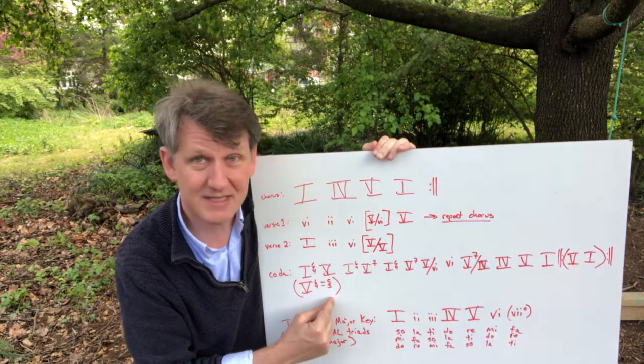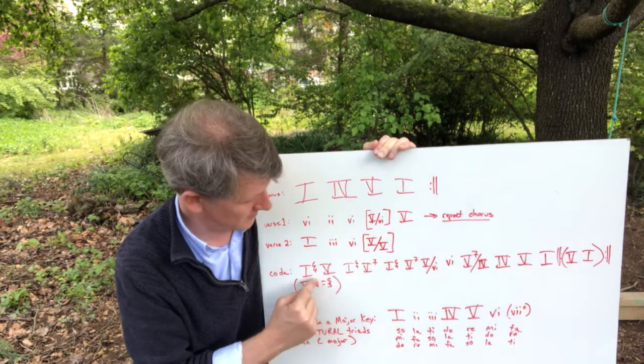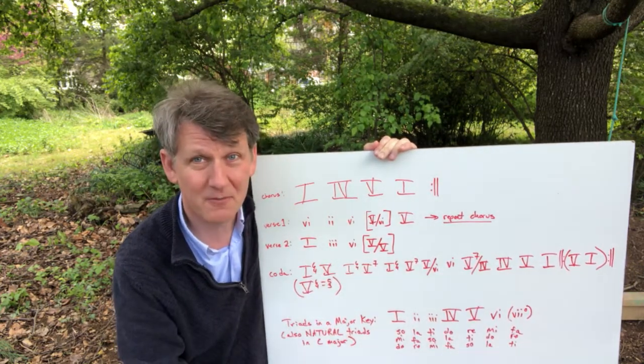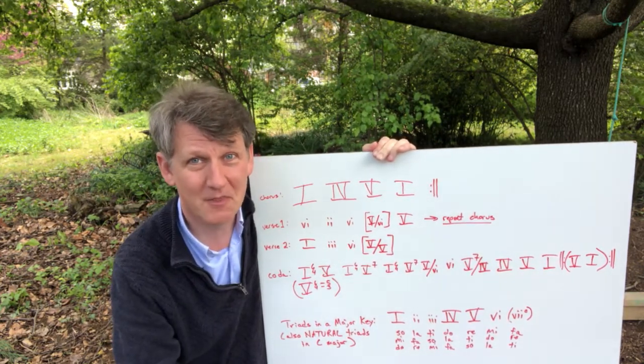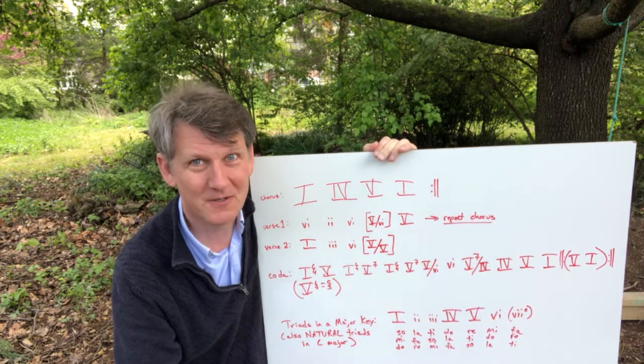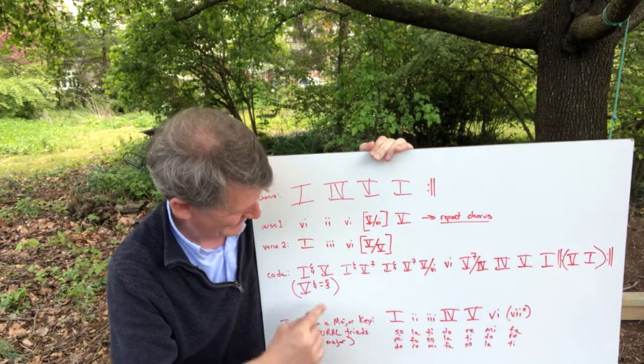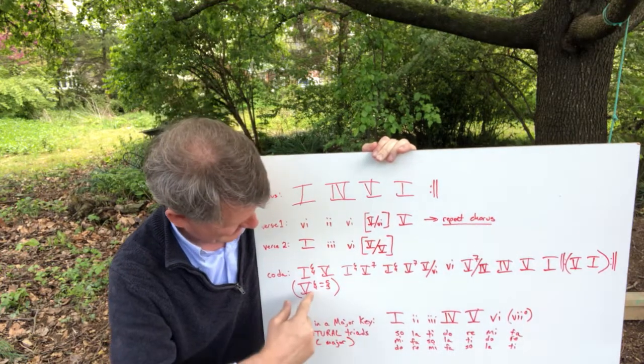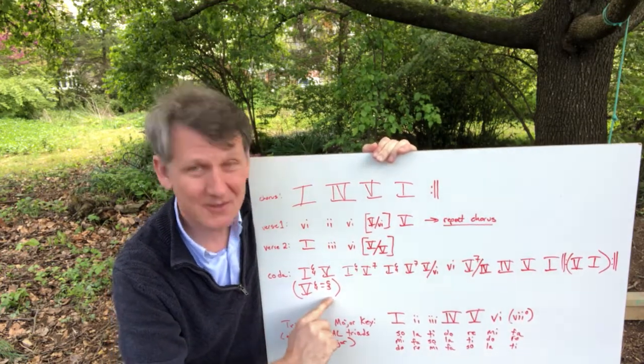And so a lot of theorists like to write it as this 5 with a 6-4 suspension going to a 5-3. If you don't understand what that means, don't worry about it. Your teacher will explain it to you in another video or elsewhere.